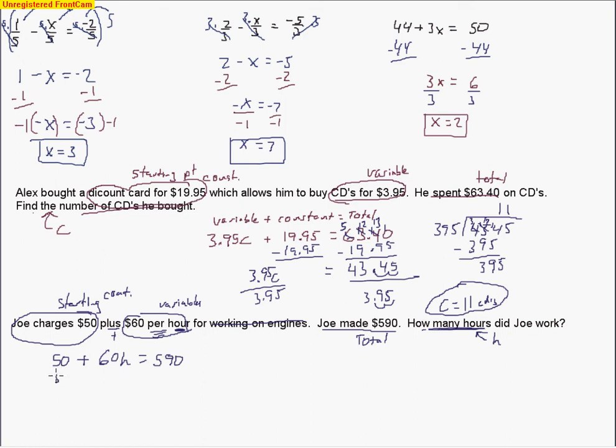So our starting point of $50 plus the $60 per hour equals the total of $590. So from this point, all we have to do is subtract the $50 from both sides. We're left with 60H equals. This makes $540. And then we divide by $60. Now when I divide by $60, I see common zeros here. Let's cancel those out. $6 into $54. That was easy. Nine times. Wow, he worked quite some time. Nine hours on that engine.